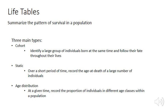Sometimes we have to construct static life tables. There are two examples: the first is where, over a short period of time, we record the age at death of a large number of individuals. The third type also produces a static life table, called an age distribution table, where at a given time we record the proportion of individuals in the population that are in different age classes.